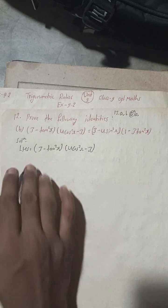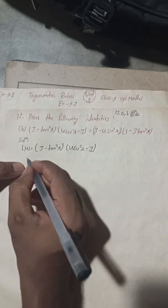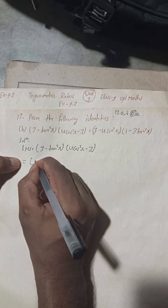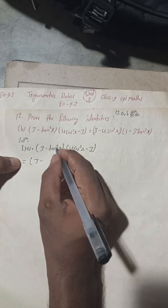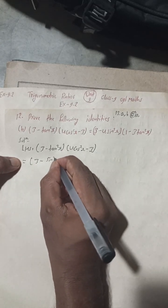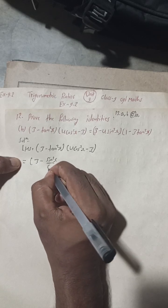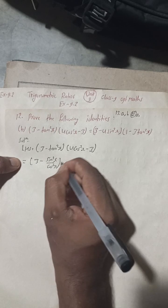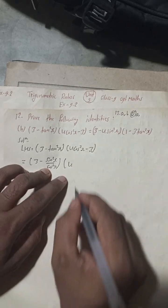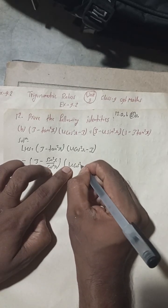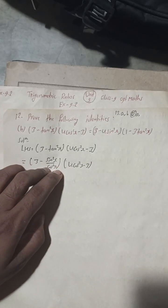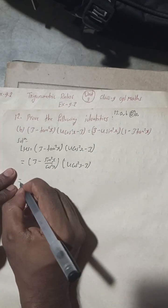Given LHS — this is the LHS. Now here, tan²x can be written as sin²x divided by cos²x, and the second factor (4cos²x - 3) remains as it is.